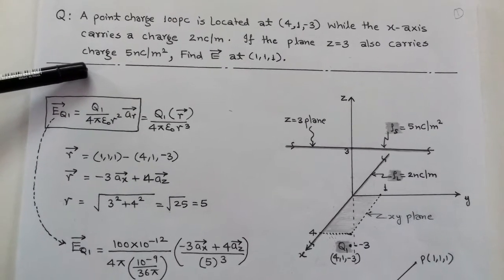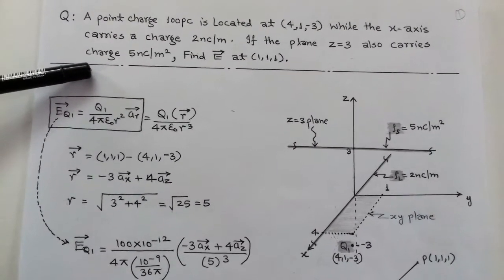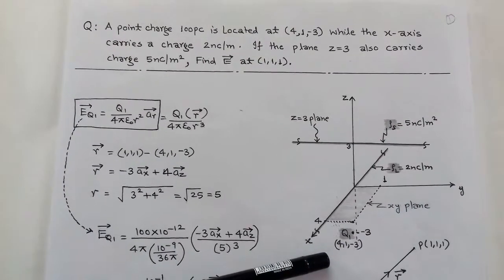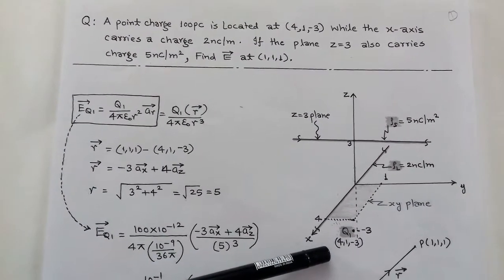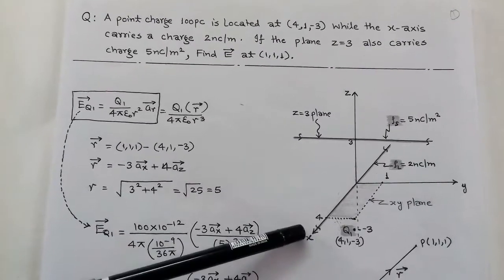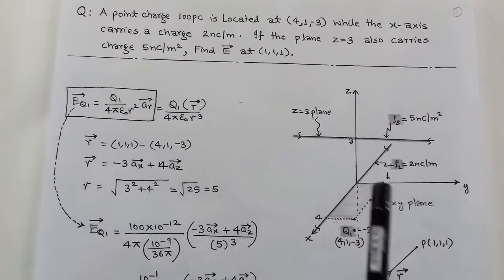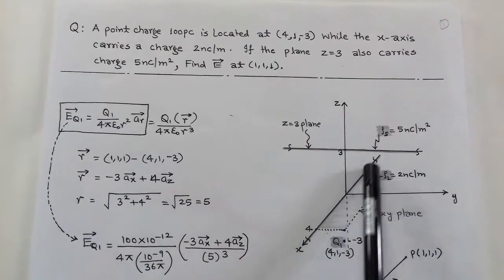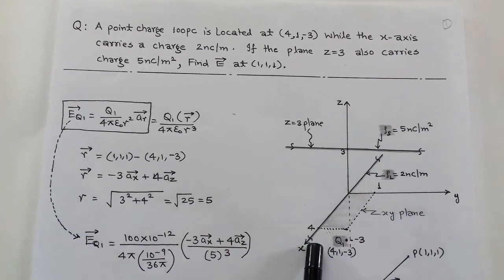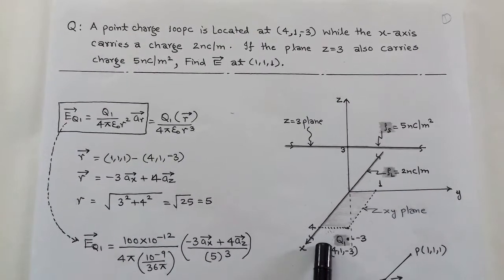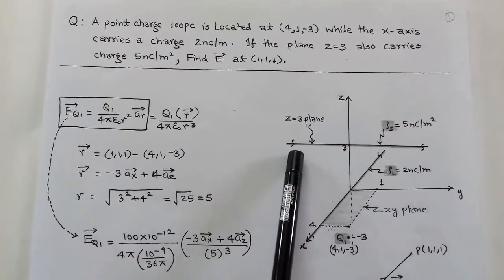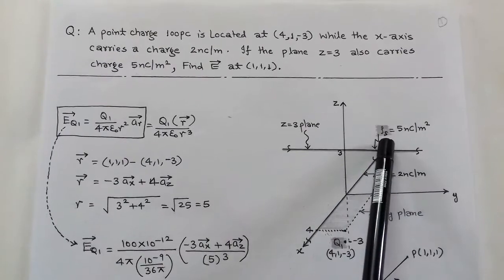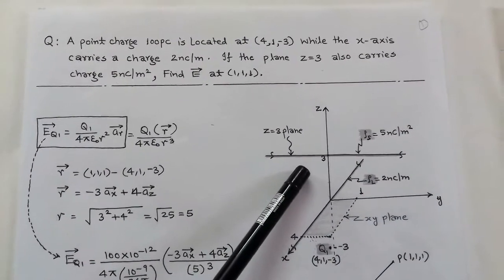This question involves three charge distributions. First, a point charge of 100 picocoulombs located at (4, 1, -3). Second, a line charge density of 2 nanocoulombs per meter situated on the x-axis. Third, a plane at z = 3 carrying a surface charge density ρs of 5 nanocoulombs per meter squared.